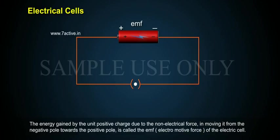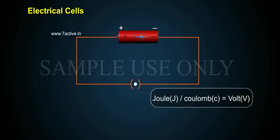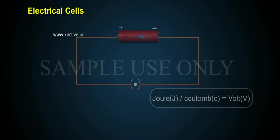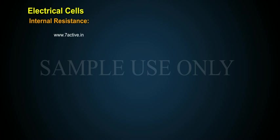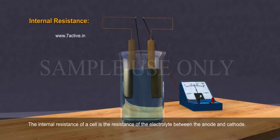The EMF of the electric cell has a unit of joule per coulomb, which equals volt. Internal resistance: the internal resistance of a cell is the resistance of the electrolyte between the anode and cathode.